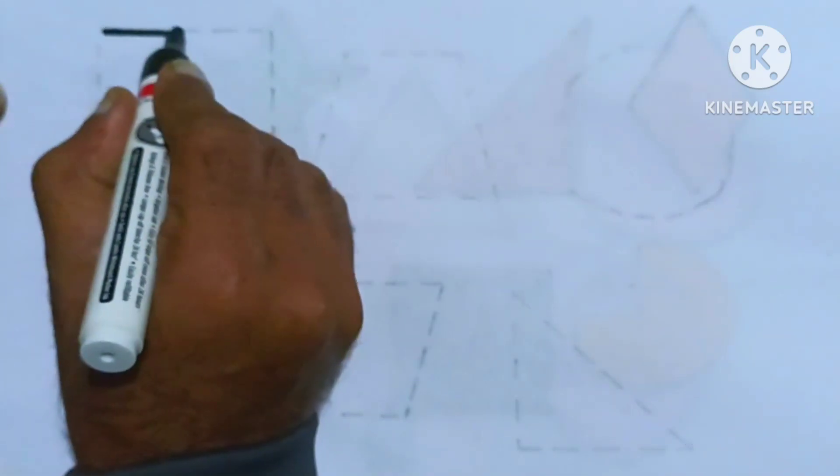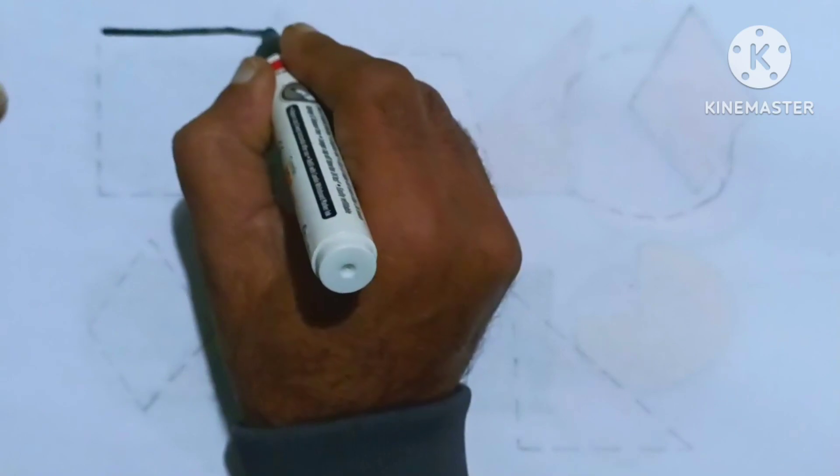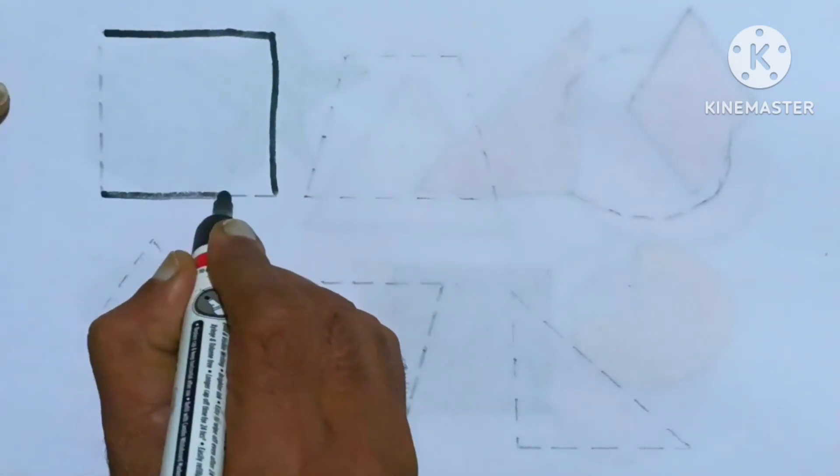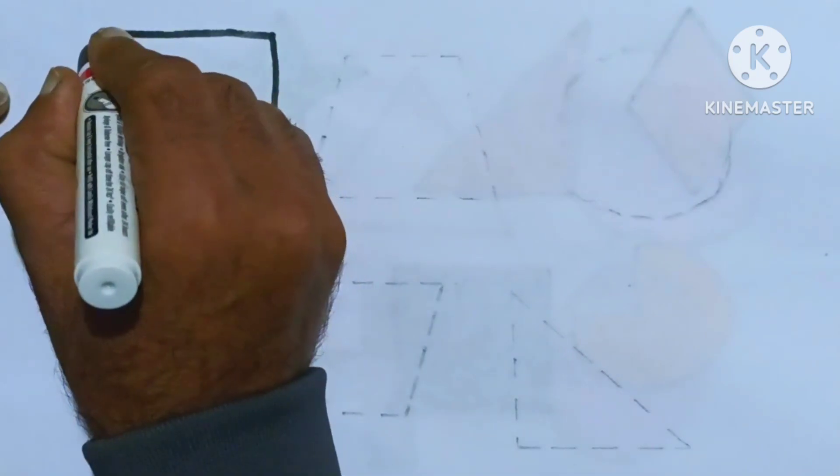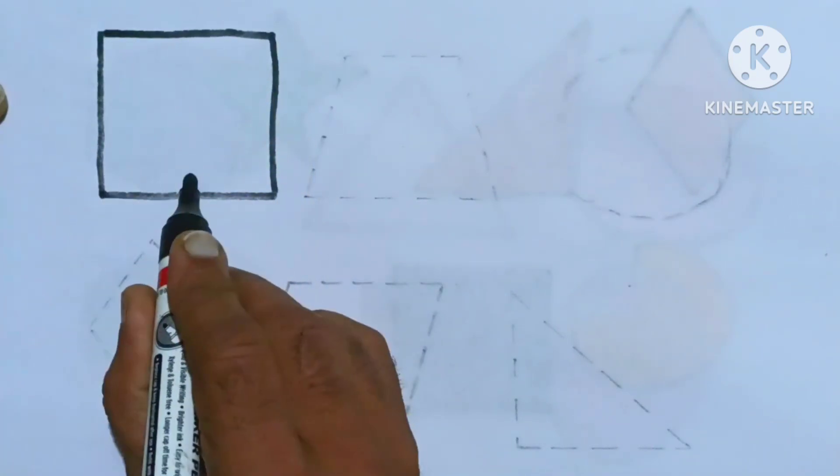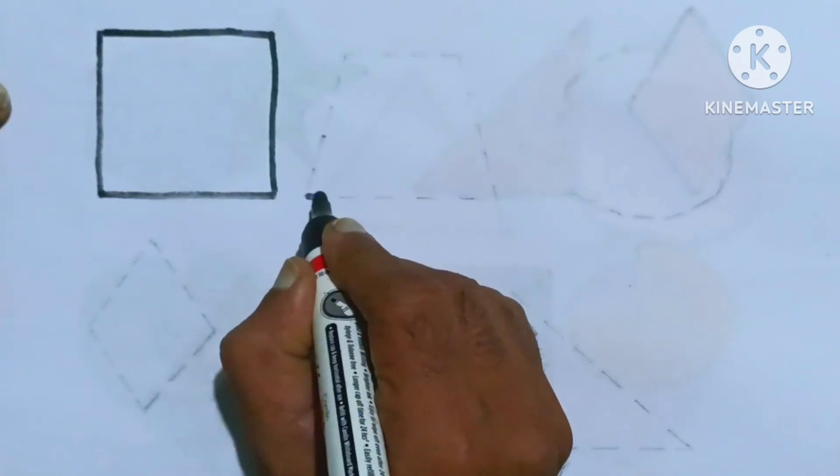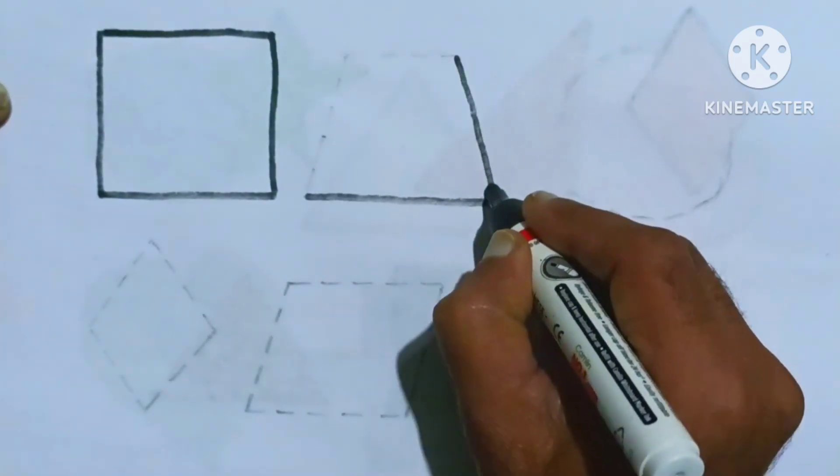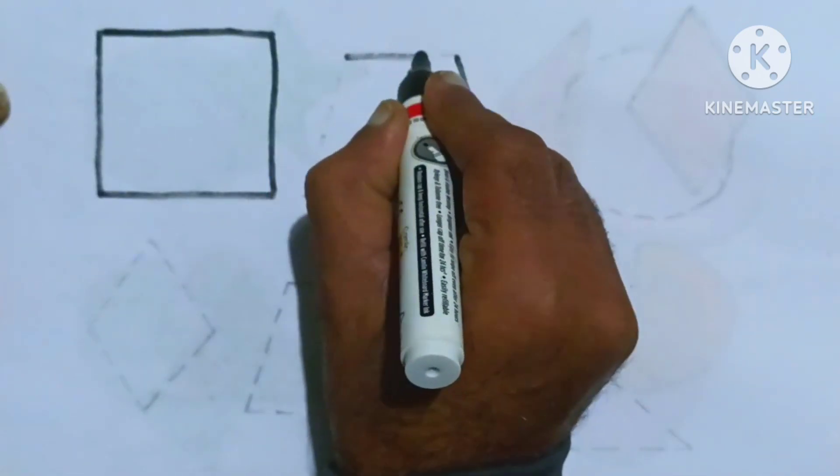A square, a square. Trapezoid shape, kids. It's a trapezoid shape. Trapezoid.